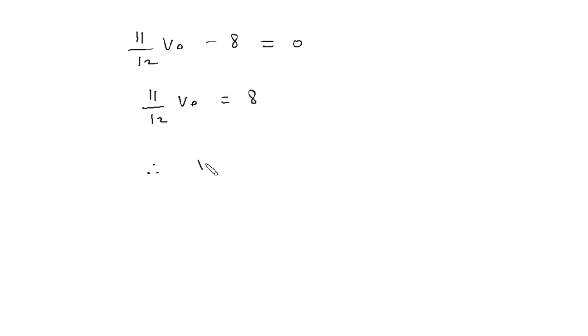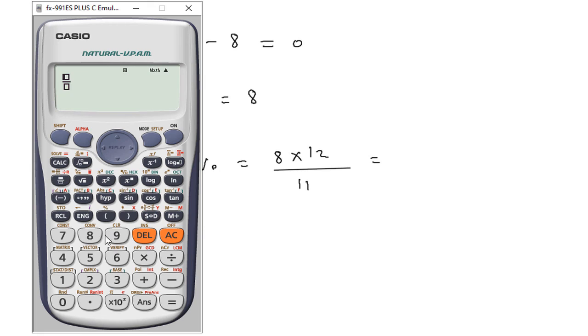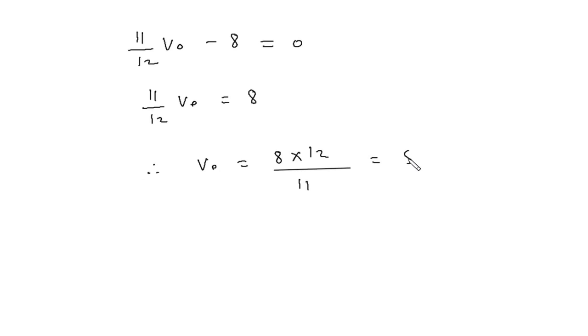Therefore Vo is equal to 8 times 12 over 11, which equals 8.72 volts. Therefore Vo equals 8.72 volts.